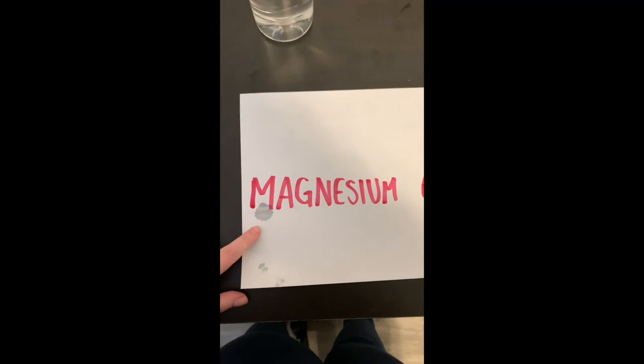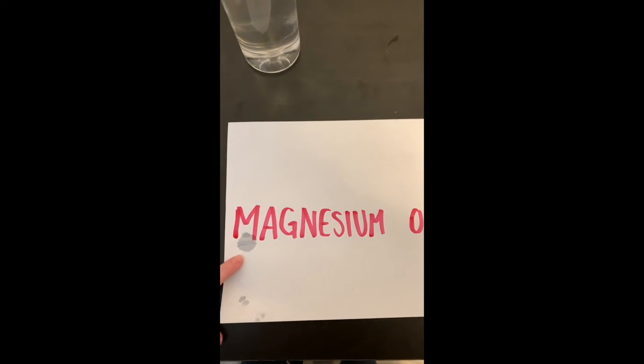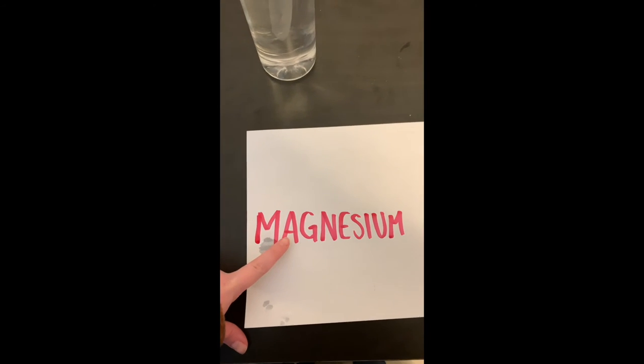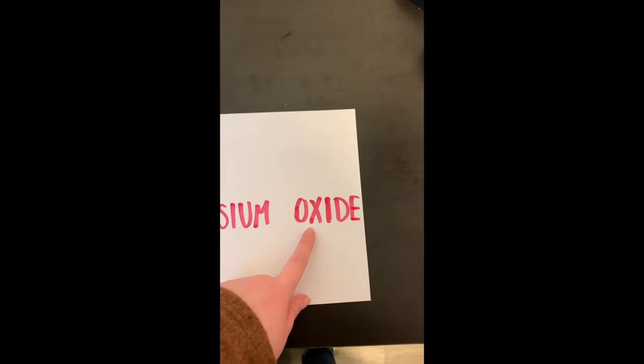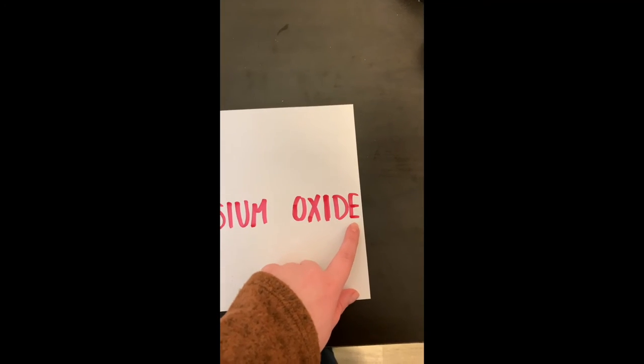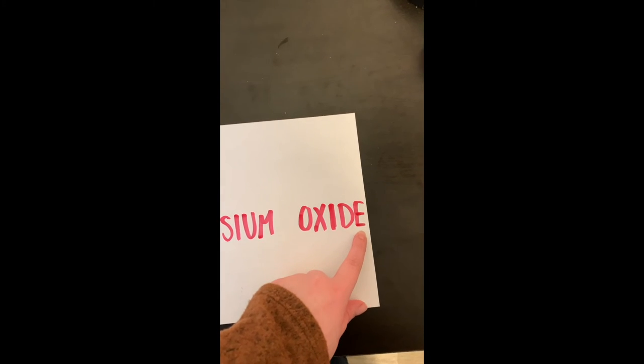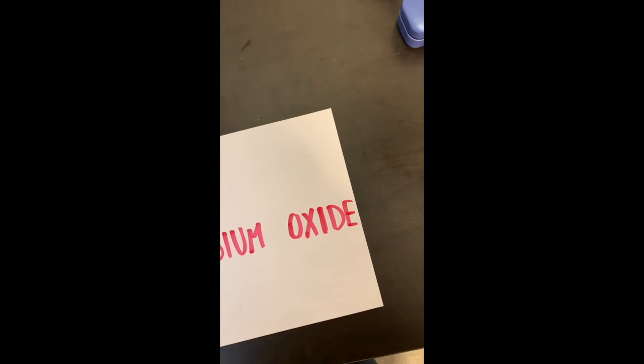So the reason this is happening is when you invert the word magnesium, all of these letters look differently when they're flipped, when they've been inverted. Right? The M turns into a W, the A turns into an upside down A, and so on. Whereas oxide, every letter in the word oxide, if they are inverted, they appear to be the same. Right? An O flipped is still an O, and same with the other letters.